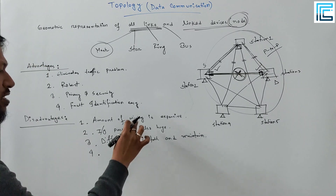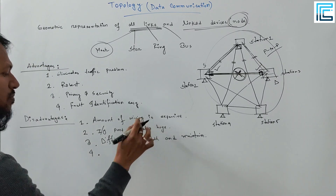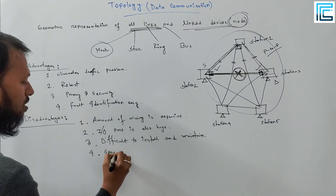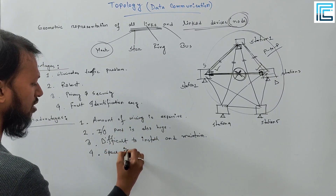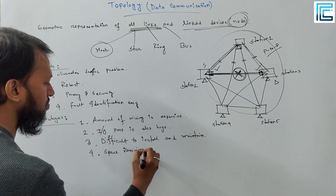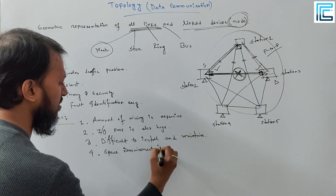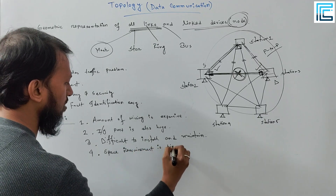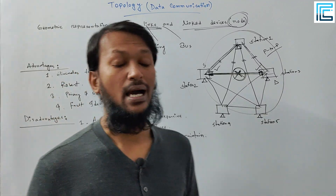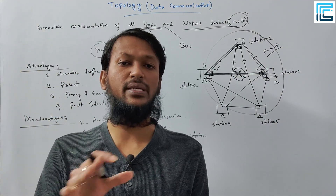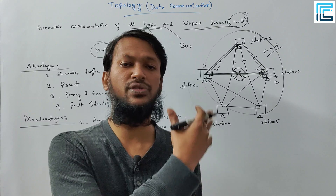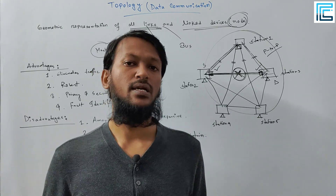Space requirement is high. If we have a device in the house, we need a lot of connectivity to accommodate it, so space requirement is very high in mesh topology.